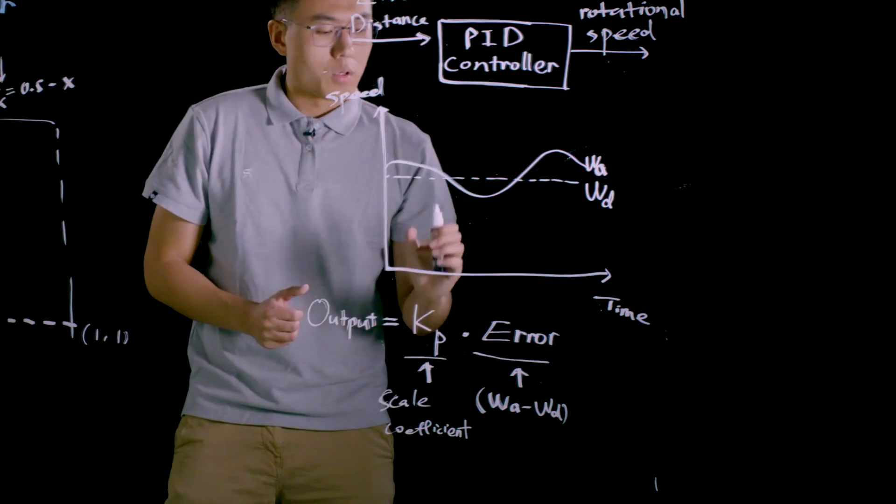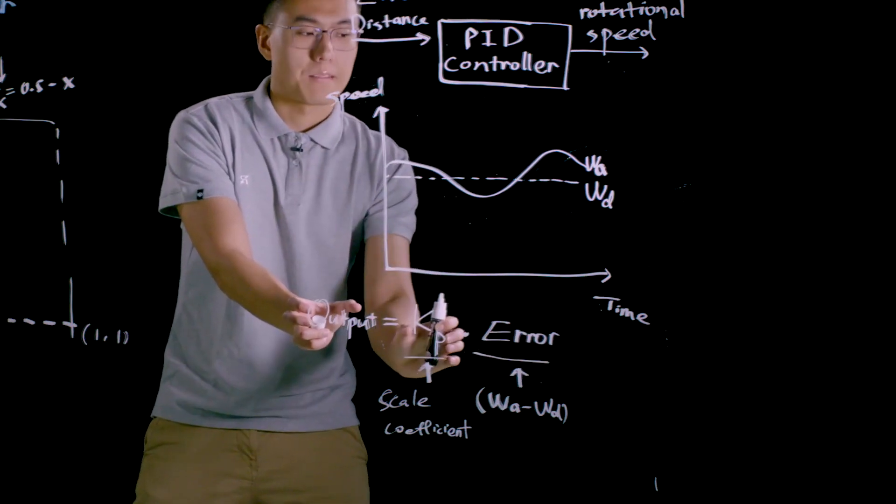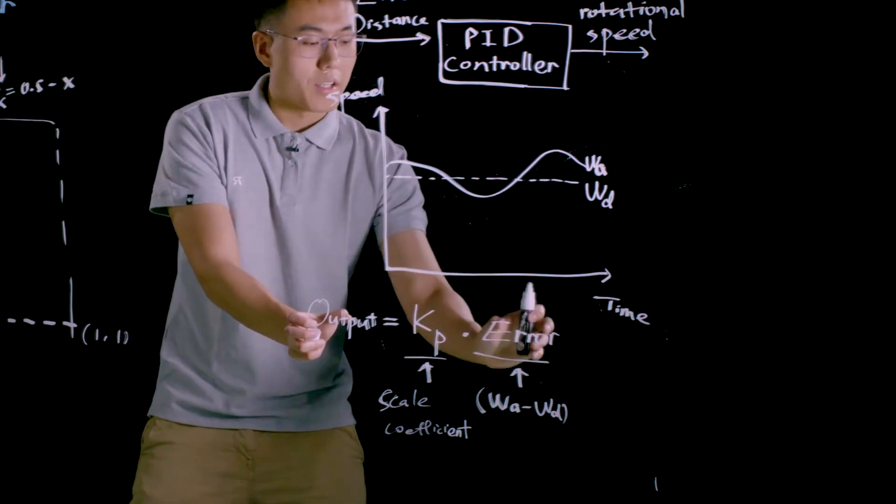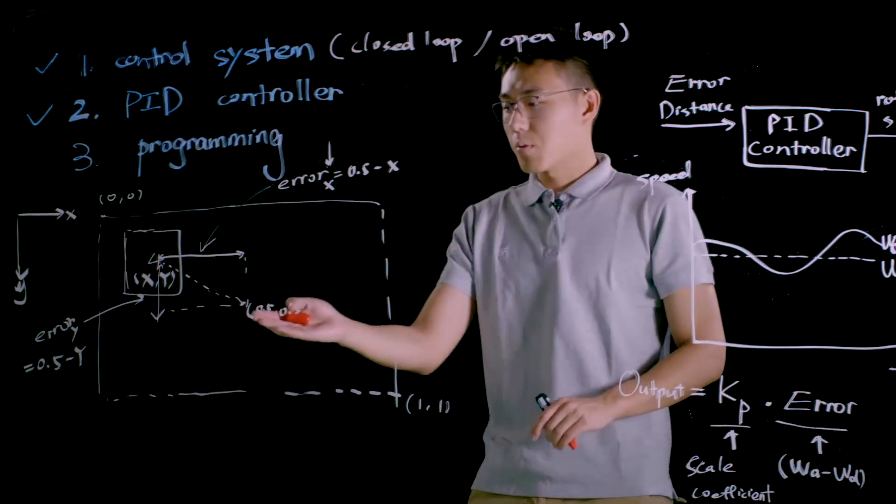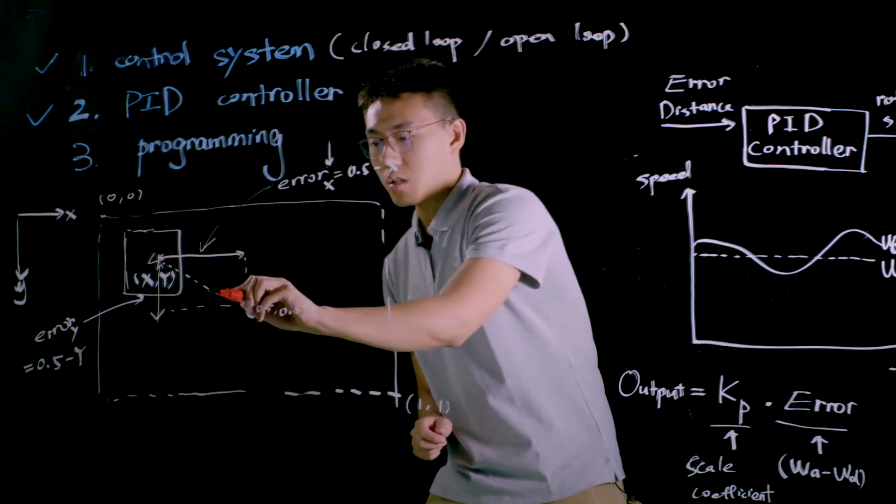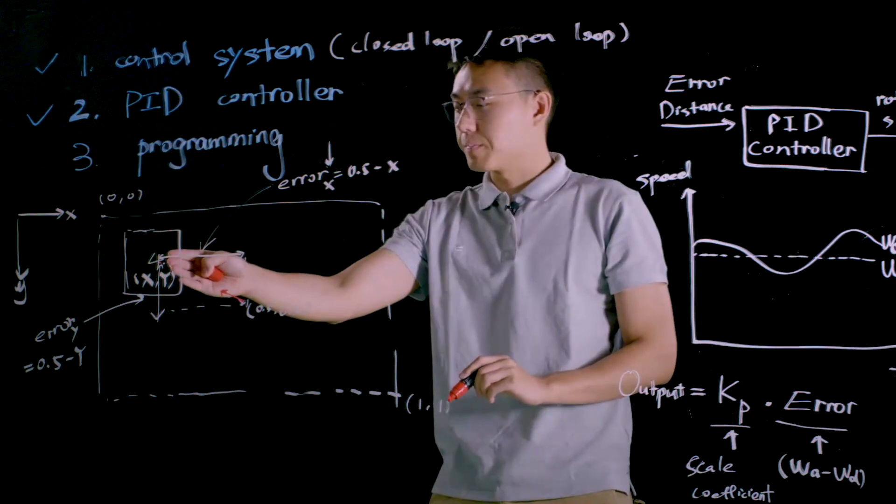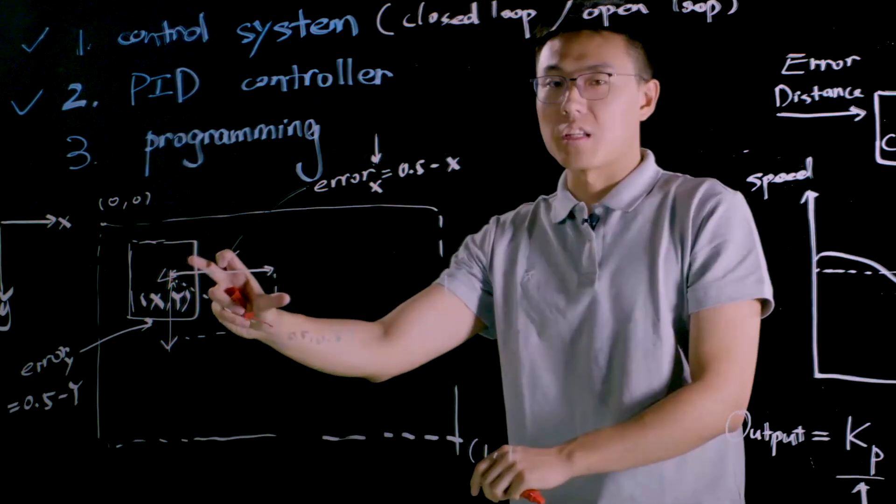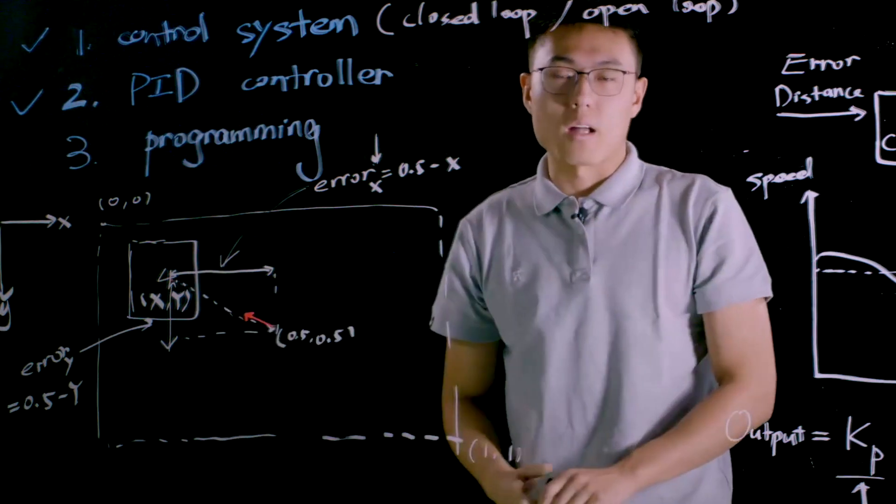So we call it proportional control because the final output is proportional to the error. If the Kp is fixed and the greater the error is, the greater the output will be. In this project, when the center of viewport is approaching to the desired position, which is the center of the visual marker, the error distance is actually decreasing, and at the same time, the rotational speed of motor is dropping as well.